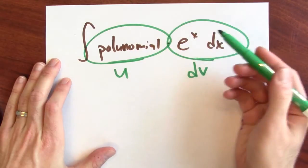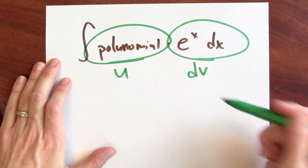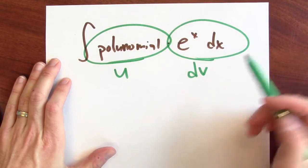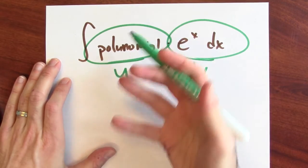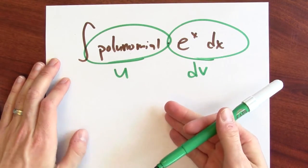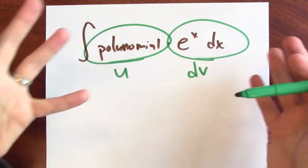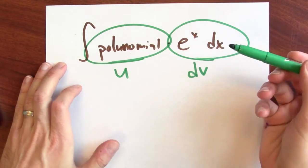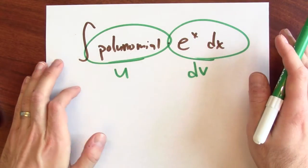But anti-differentiating e to the x is paying no price at all because it's its own anti-derivative. And if you differentiate the polynomial, then you reduce its degree. So, by doing parts enough times, eventually you're just anti-differentiating e to the x by itself, which you can definitely do.